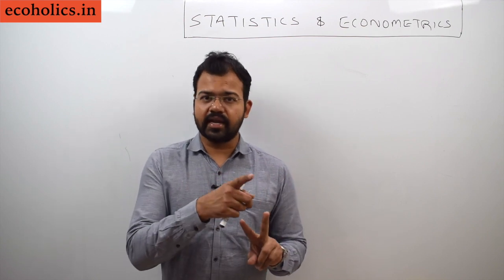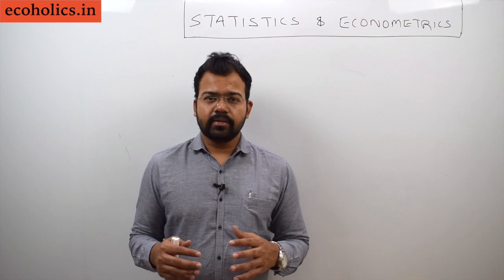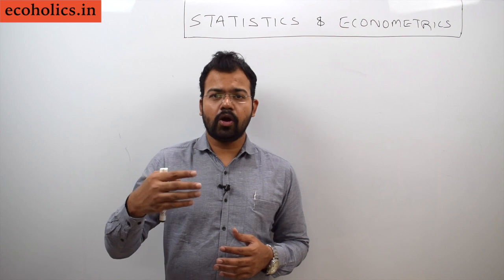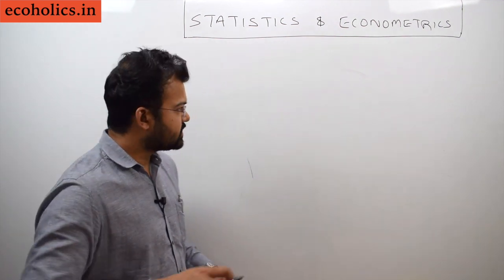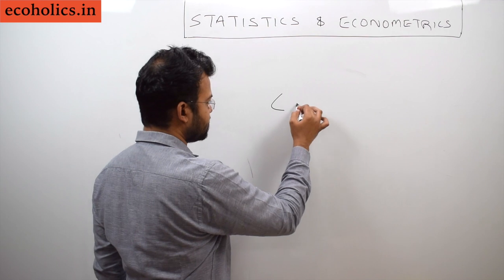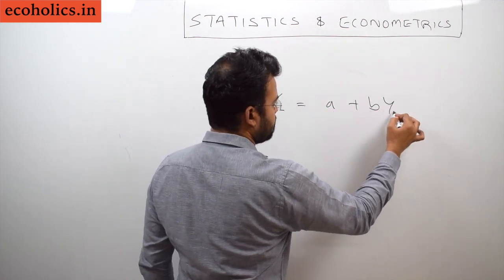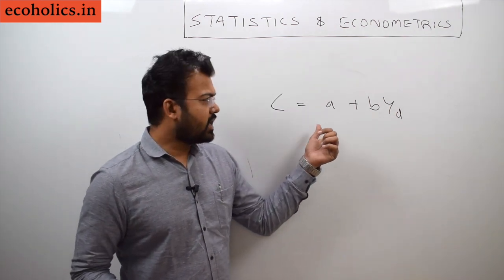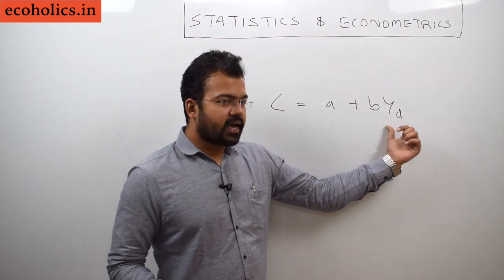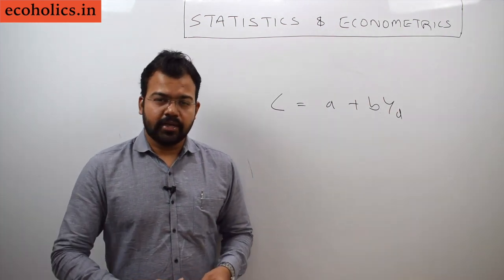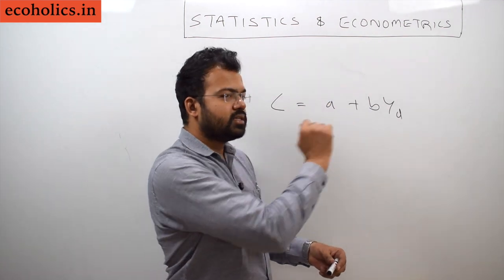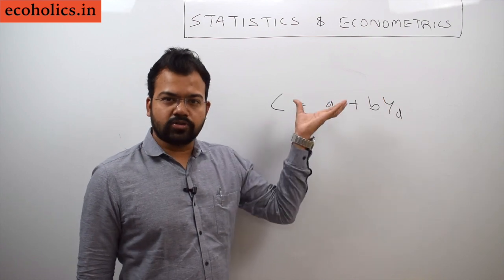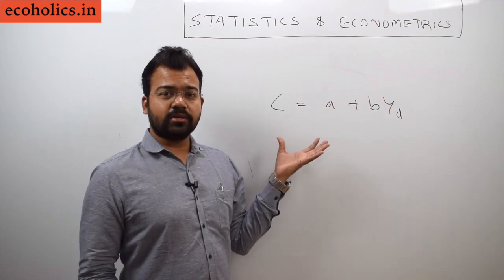The first is the dependent variable and the second is the independent variable. The dependent variable, also called the explained variable, depends on one or more independent variables. For example, consumption is dependent on disposable income. So here C is consumption, A and B are the coefficient parameters, and YD is the independent variable — meaning consumption depends on the level of a consumer's income.